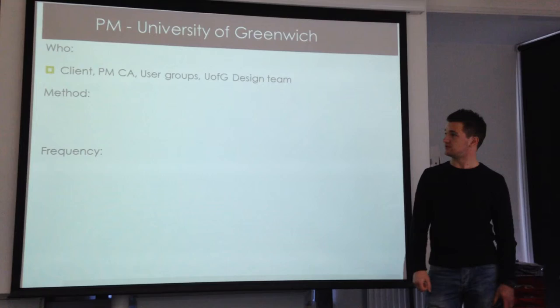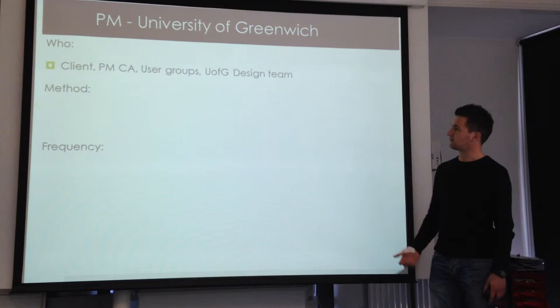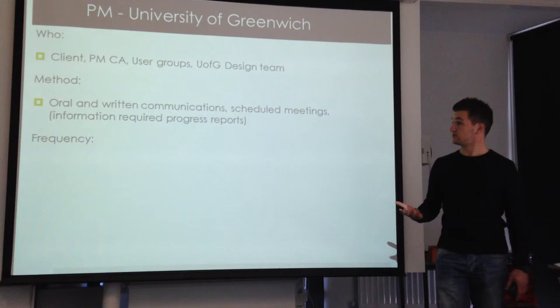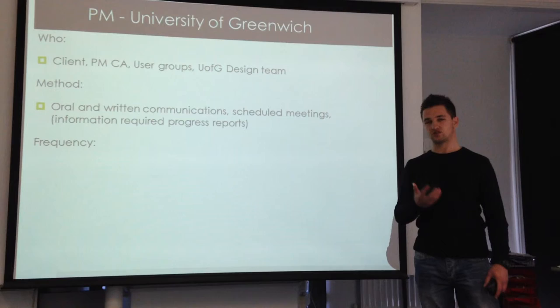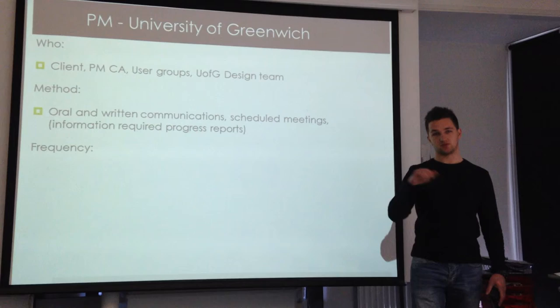So the project manager — who are they talking to? They will talk to the client, the other project manager on the contract administrator side, the user groups, the stakeholders, the end users, and the University of Greenwich design team — so the architect, the quantity surveyor, all those people. The methods they'll use: oral and written communication. There will definitely be scheduled meetings, and this is a two-way thing. They will be talking to those people, but in return they will be asking for progress reports to be sent to them. Communication is obviously a two-way thing.